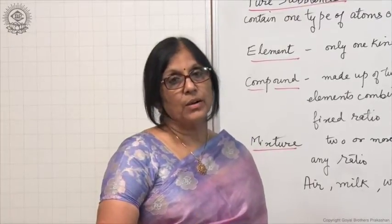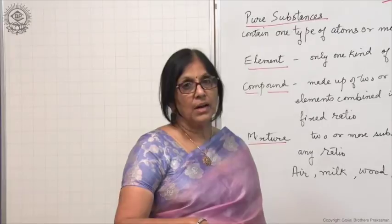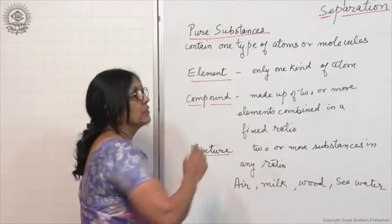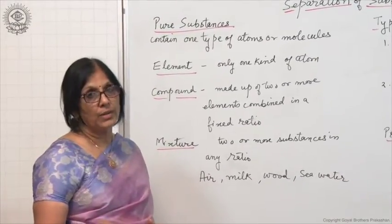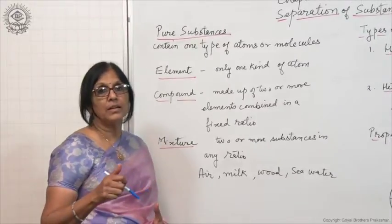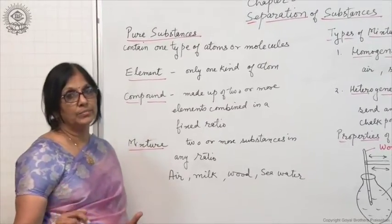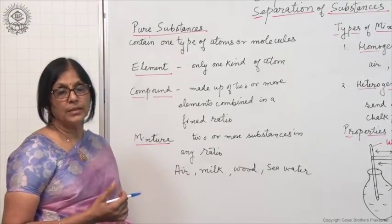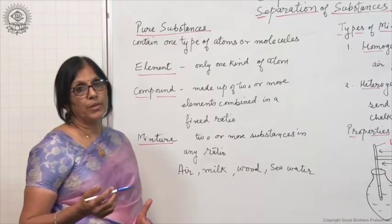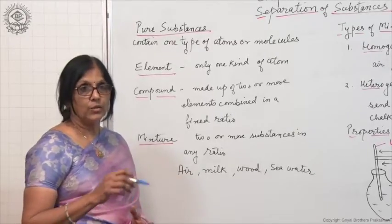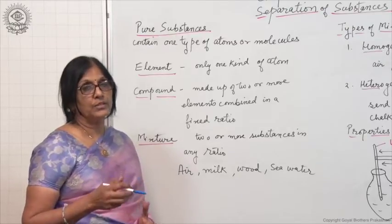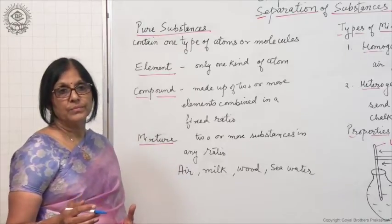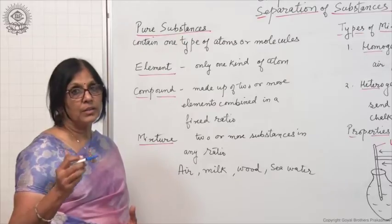As we have discussed earlier, pure substances are of two types: elements and compounds. The smallest particle of an element is an atom, and this smallest particle shows all the properties of that element, like gold. The smallest particle of gold is a gold atom, and gold is made up of gold atoms. So it contains only one kind of atoms.